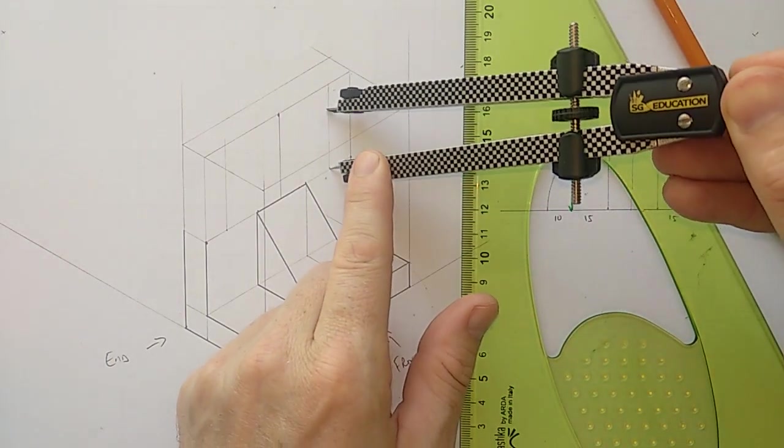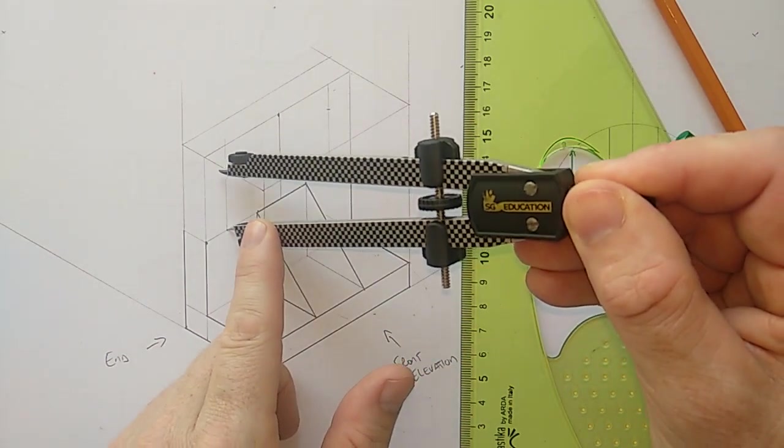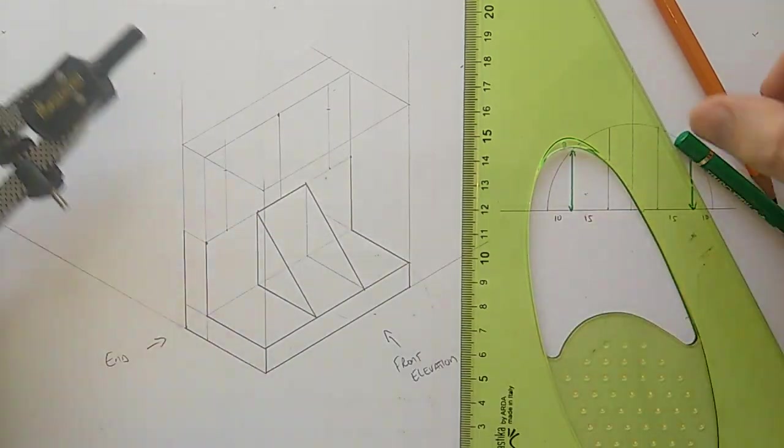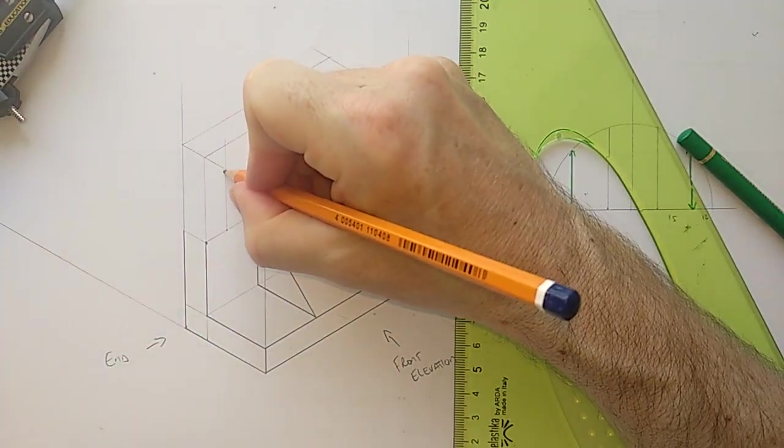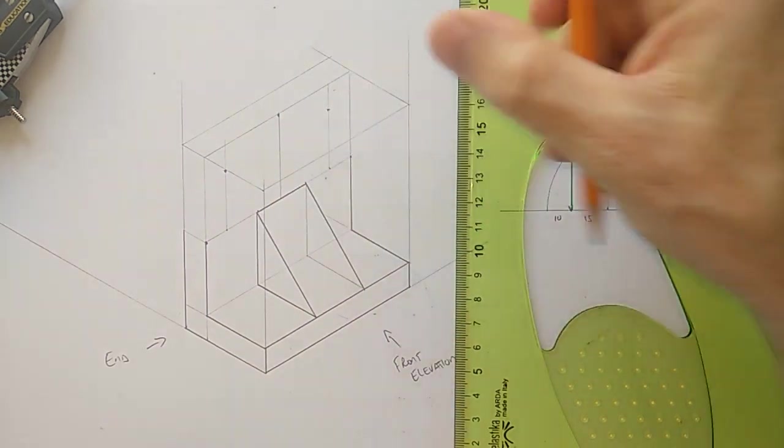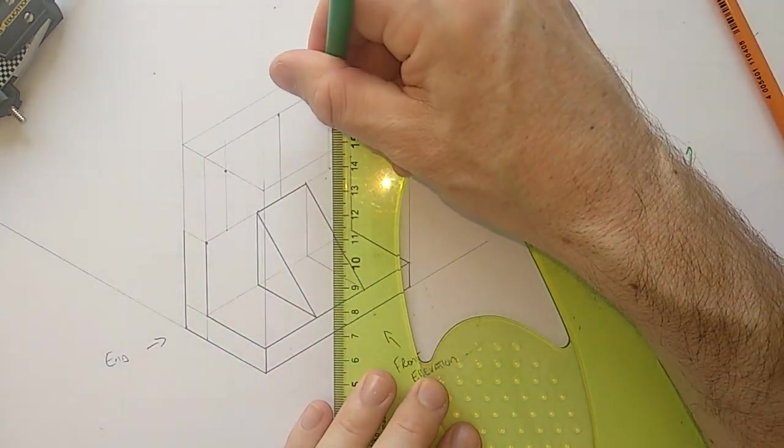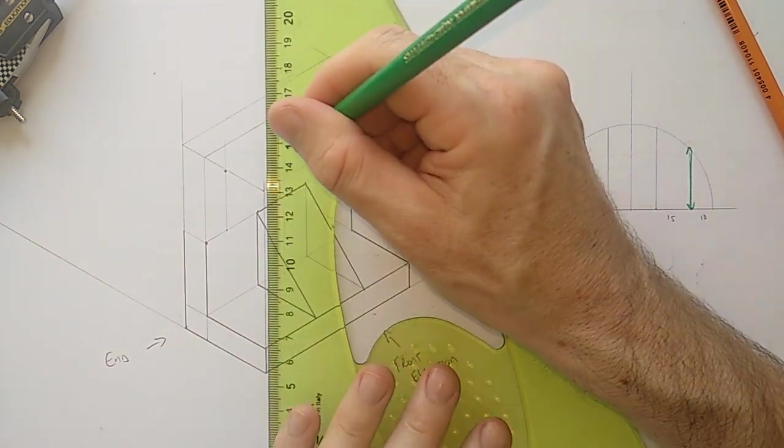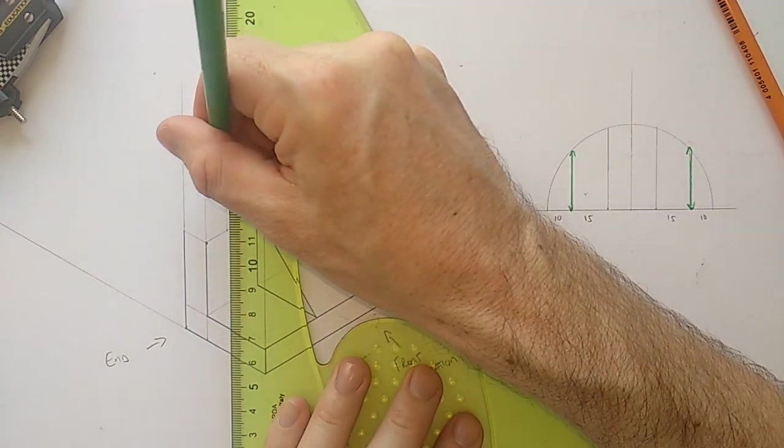We'll just give ourselves a construction to work up. And by marking that distance there and there, we know where our next points are. Let's just heavy them in a little bit more so you can see them. So this distance here is the green distance on my construction.